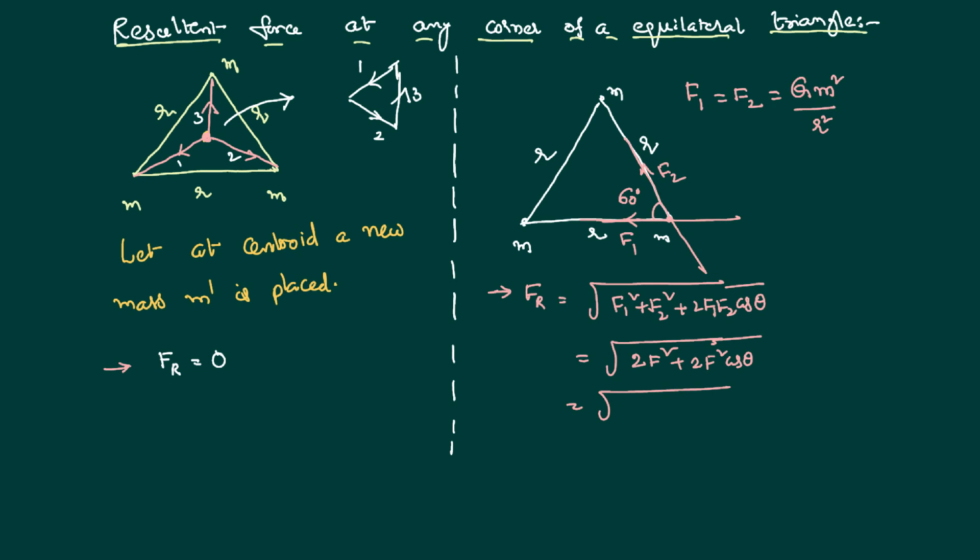We can take 2F square common and 1 plus cos theta. We know that 1 plus cos theta is nothing but equal to 2 cos square theta by 2. So, the overall value is square root of 4F square cos square theta by 2. Taking the value out of the square root, the value is nothing but equal to F resultant at any corner of the equilateral triangle. When identical masses are placed at the corners of the triangle is nothing but equal to 2F cos theta by 2.